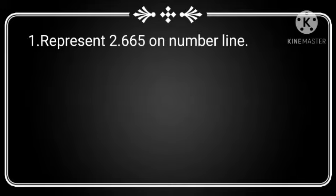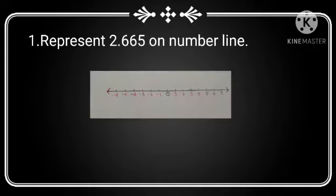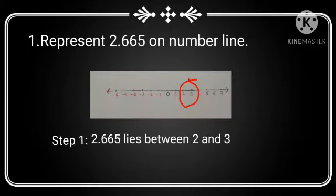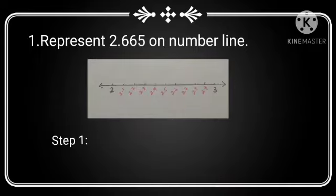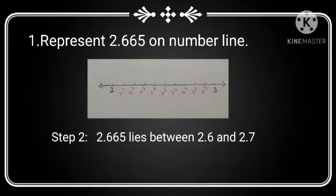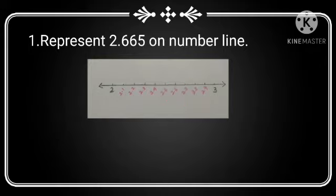Example 1: Represent 2.665 on a number line. This is our number line. 2.665 lies between 2 and 3. Now we will magnify the region between 2 and 3. So here, 2.665 lies between 2.6 and 2.7.